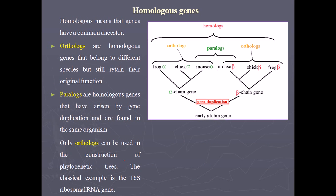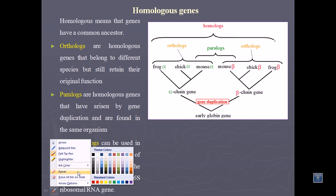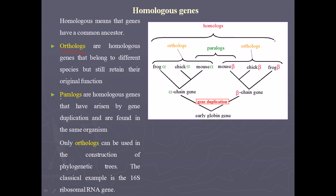Now let's talk about homologous genes and their importance. Before that, I must explain orthologs and paralogs. Orthologs are homologous genes that belong to different species but still retain their original function — they are doing the same job they used to do at an earlier time, but they are now present in different species.